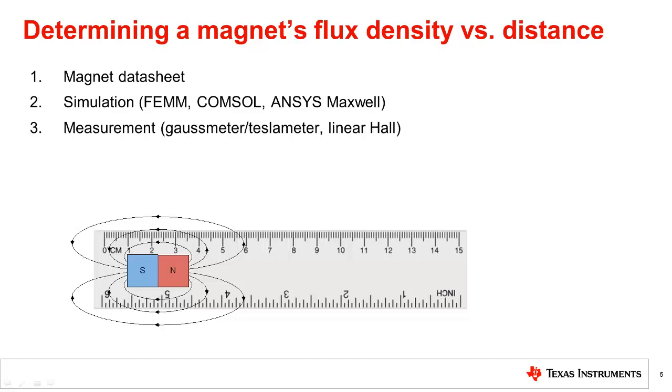Another way to determine flux density at a given distance from a given magnet is to measure it. There are hand-held instruments called gauss meters or tesla meters that provide a flux density readout. An alternative way of measuring it is to swap the Hall sensor in your system with a linear Hall sensor, which outputs an analog voltage proportional to flux density.